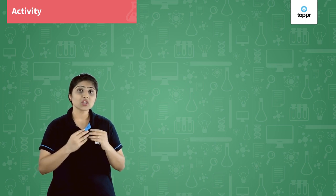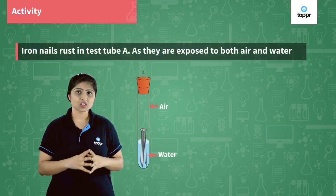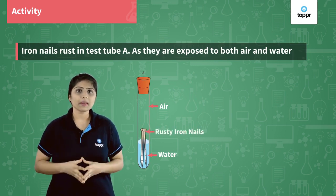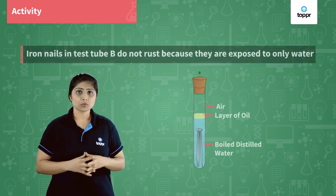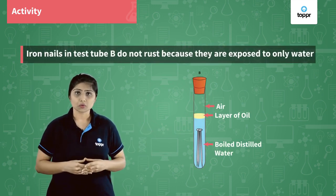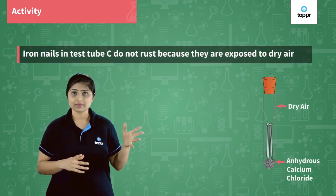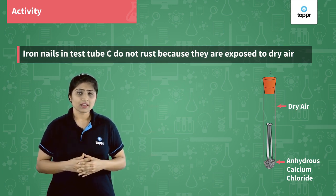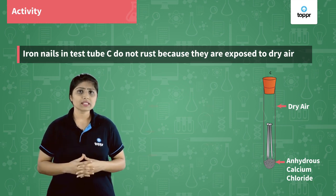After 2 days, when we check test tube A, the iron nails present in this test tube have corroded — rust has formed on them. In the second test tube, the boiled water test tube, there is no corrosion of iron. Whereas in test tube C, there is a small layer of iron oxide formed, but it is not rust because this layer removes off easily.